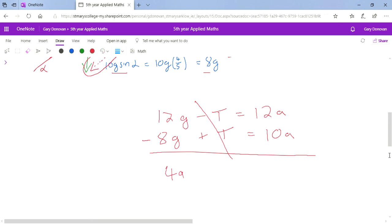It will be 4g equals 22a. So a equals 4g over 22. A equals 2g over 11. And you can leave your answer like that. So that's your answer to part 1 for a.